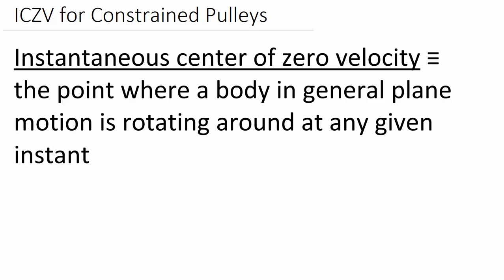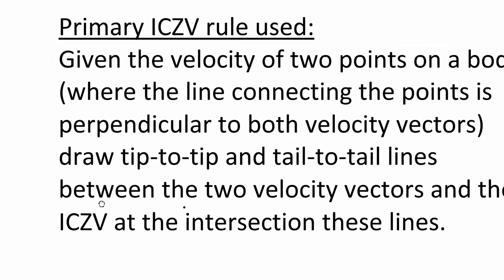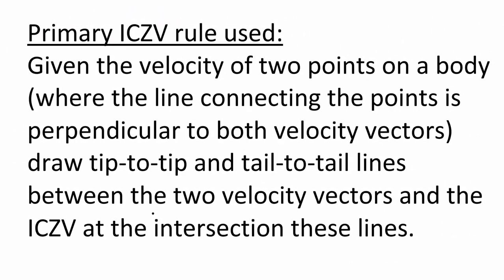So let's take a look at that rule that we have for finding ICZVs. Primarily rule that we'll use today is going to be given the velocity of two points on a body, not one, but we do need two points. That can be a zero velocity point, but at least two points. And the line connecting these two points needs to be perpendicular to both velocity vectors, and I'll draw you a picture of that down below here.